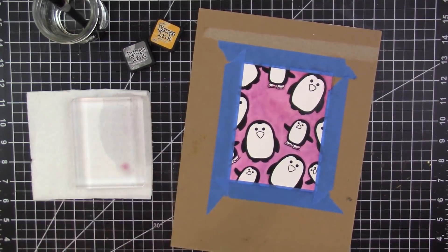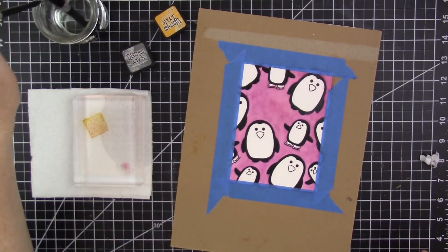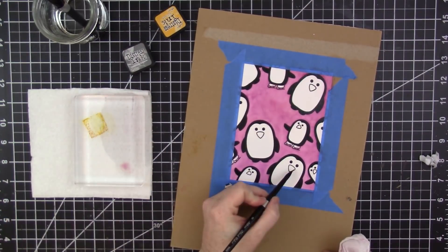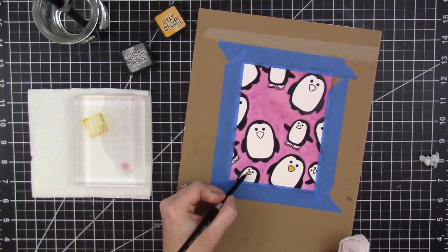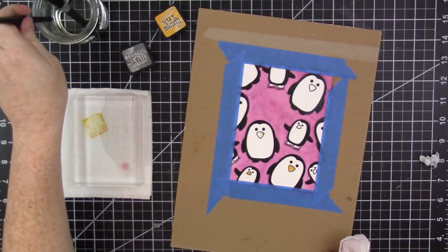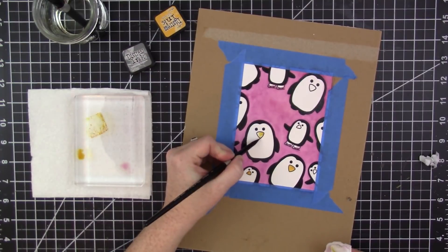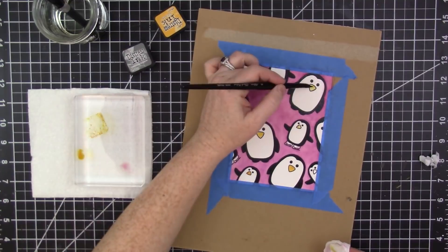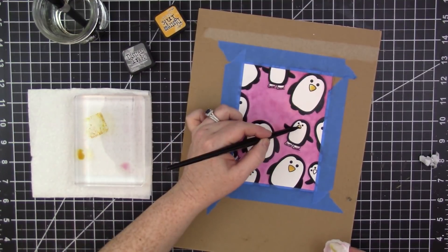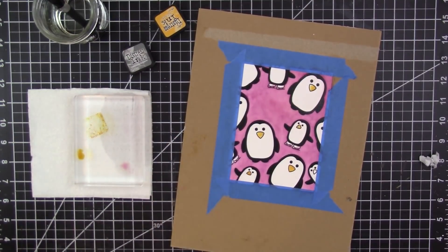So I'm going to add some shading to the penguins with the color Hickory Smoke for their bodies and Wild Honey for their beaks. I switch to a number 10 round brush because it's a little smaller. I probably could have used a number 10 on the whole project but it ended up being fine.